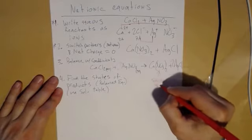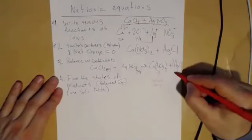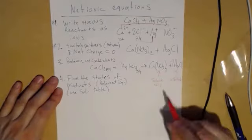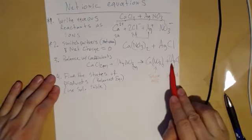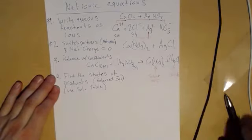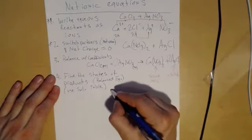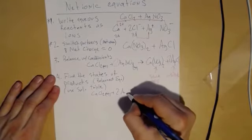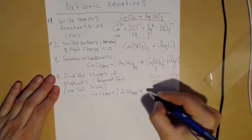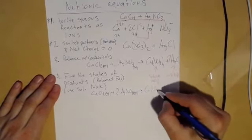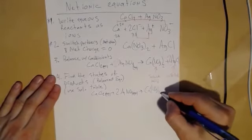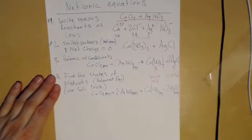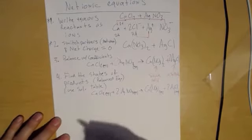And so in this case, I'm going to realize that this one is soluble because nitrate is always. And in this case, this one is insoluble. That chloride is usually soluble, but not with silver. And so I basically just rewrite the whole thing. CaCl2 aqueous plus 2 AgNO3 aqueous goes to Ca(NO3)2 aqueous plus 2 AgCl solid.